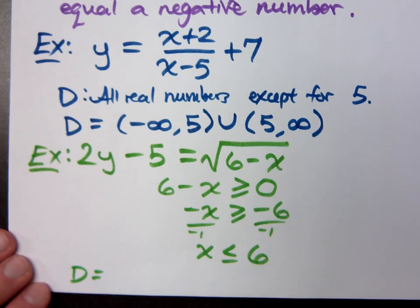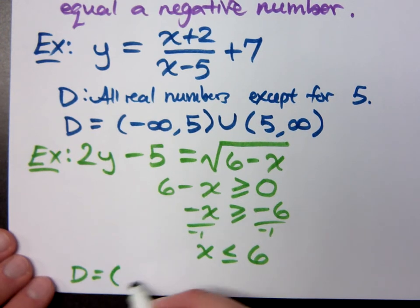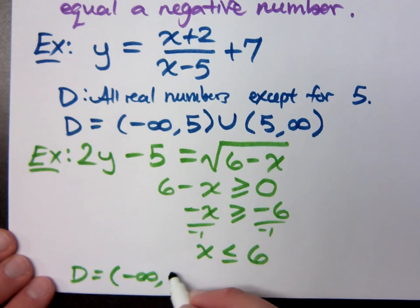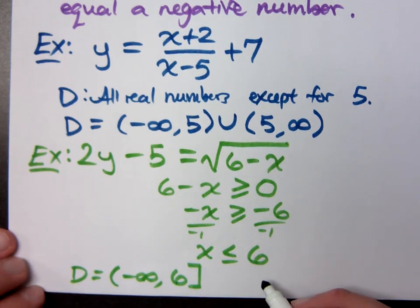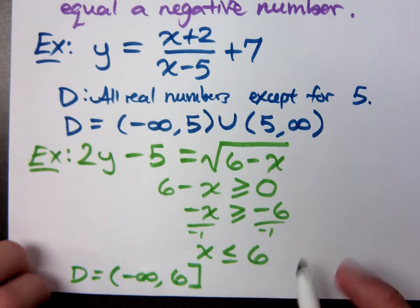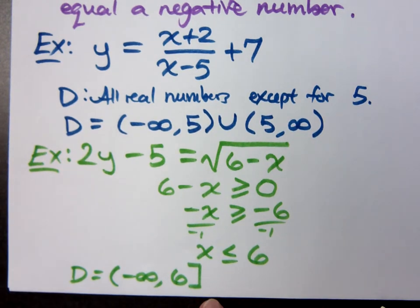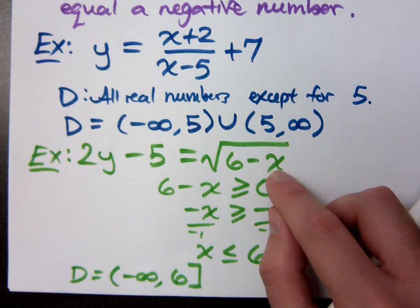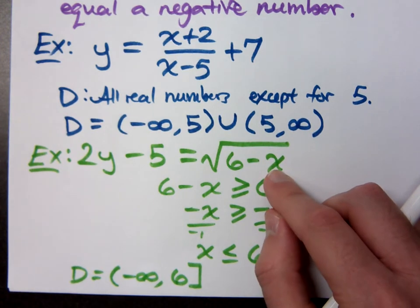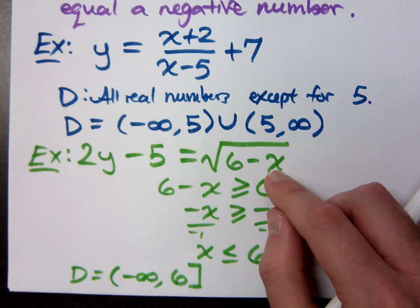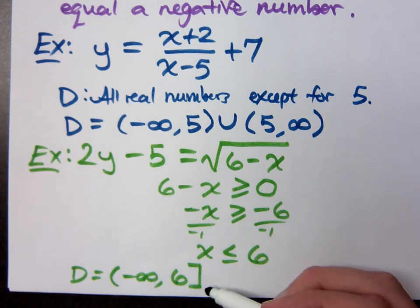Less than or equal to six in interval notation is negative infinity to six. Do I union this with anything else? No. If you pick anything that's greater than six, for example seven, try to plug in seven here, what happens? You have something that's negative inside the square root, and that doesn't work out well for you. So this is your domain for this guy.